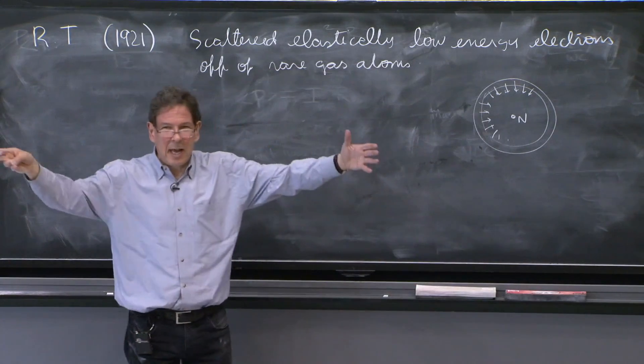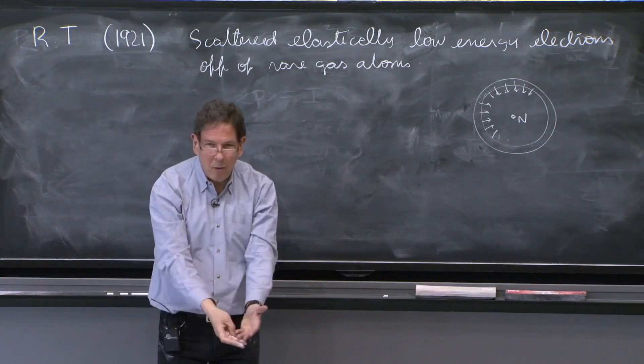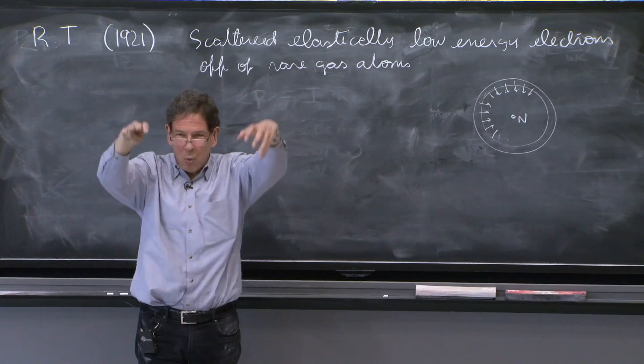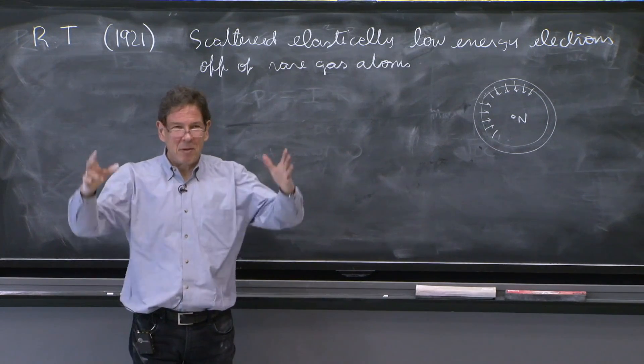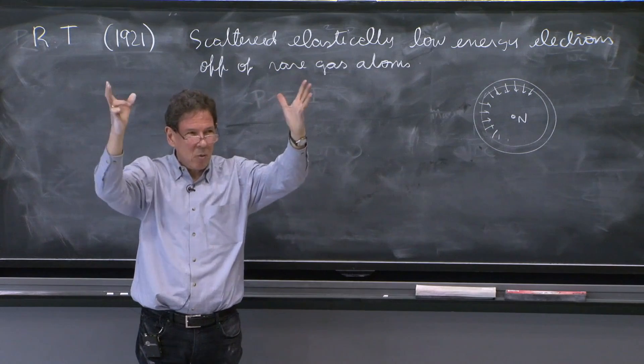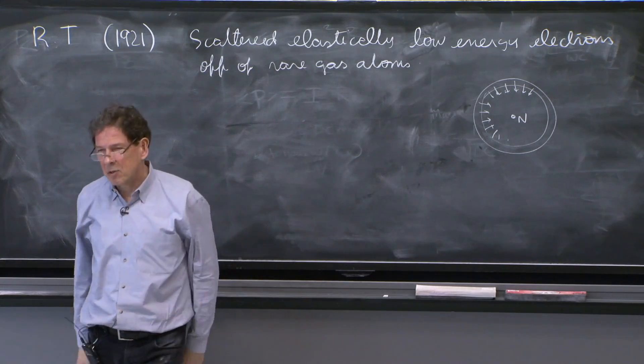So basically, this is like a deep square well, or spherical well, representing the atom. The atom can be modeled with some sort of spherical well that attracts the electrons.